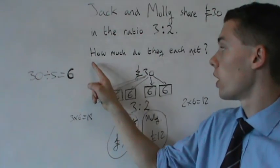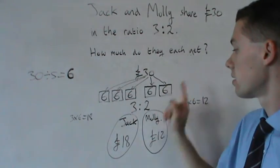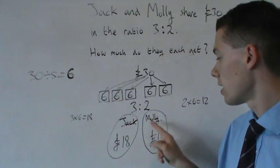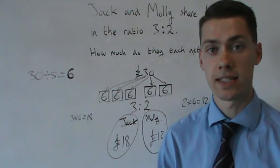So, to answer the original question, how much do they each get? Jack gets 18 pounds and Molly gets 12 pounds. And that's it.